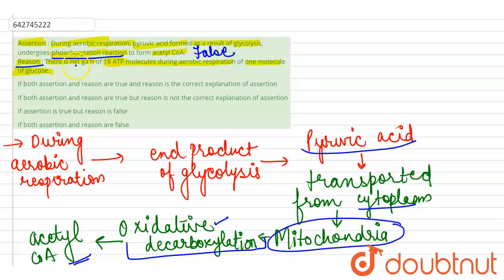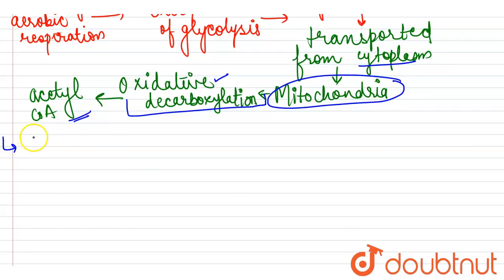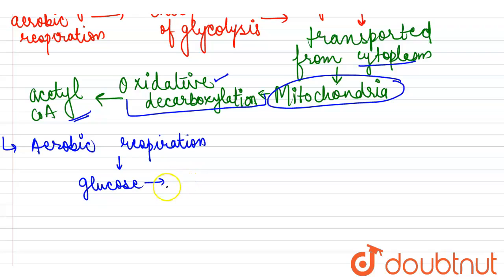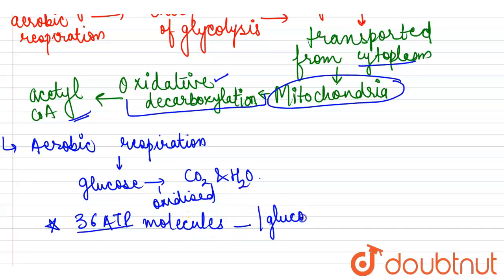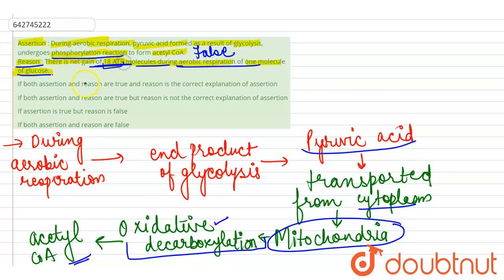Now looking at the reason: it states there is a net gain of 18 ATP molecules during aerobic respiration of one molecule of glucose. However, during complete oxidation of glucose into carbon dioxide and water, the net gain is 36 molecules of ATP. Since 36 ATP molecules are formed — not 18 — the reason is also incorrect.